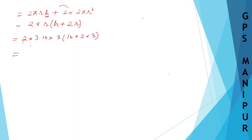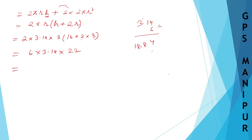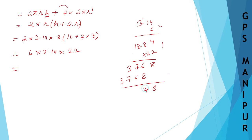So now, 3 into 2 gives 6, into 3.14 into the bracket 16 plus 6 equals 22. Multiplying 3.14 into 6 gives 18.84. Then 18.84 into 22: working through the multiplication gives 414.48 centimeters squared.